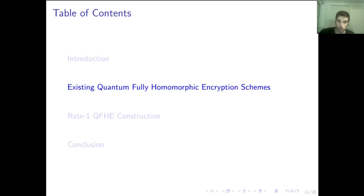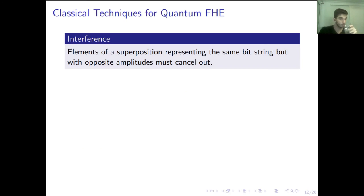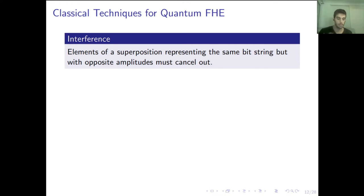Before getting into the actual construction, I need to talk about some existing quantum full homomorphic encryption schemes and techniques we're going to use. I want to start with some intuition about why we cannot just use classical methods and extend classical encryption schemes into the quantum setting — and why this is not trivial. One of the key reasons is interference. In quantum computations, interference is very important: elements of the superposition representing the same bit string but with opposite amplitudes cancel out.